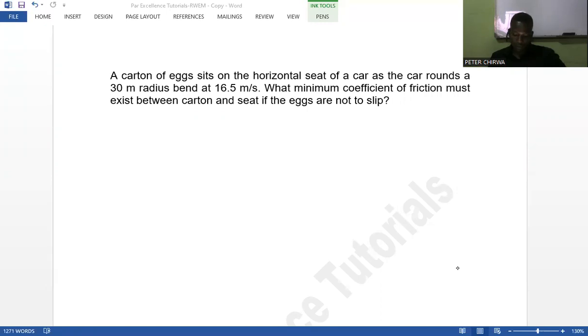...sits on the horizontal seat of a car as the car rounds a 30 meter radius bend at 16.5 meters per second. What minimum coefficient of friction must exist between the carton and the seat if the eggs are not to slip?